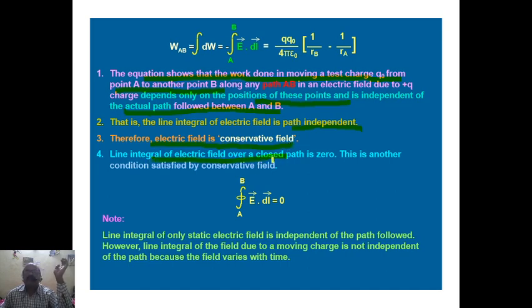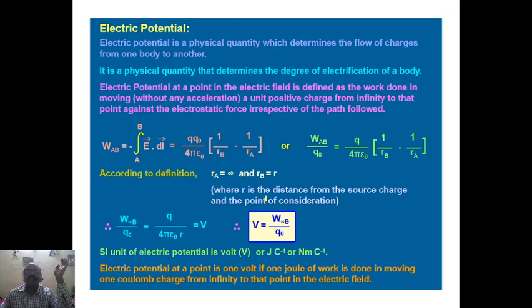Therefore the electric field is a conservative field, and the line integral of the electric field over a closed path is zero.